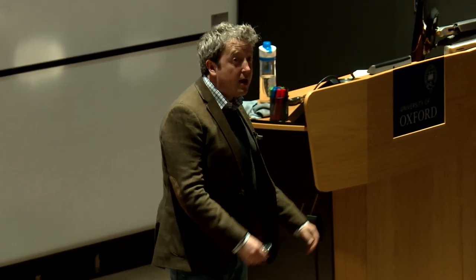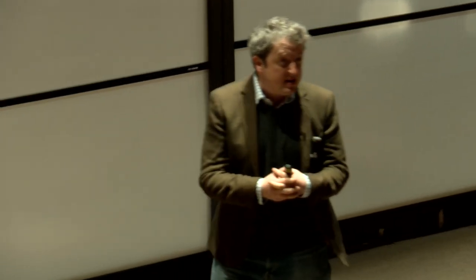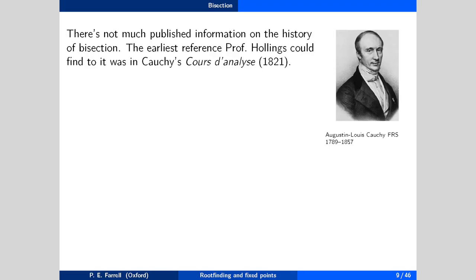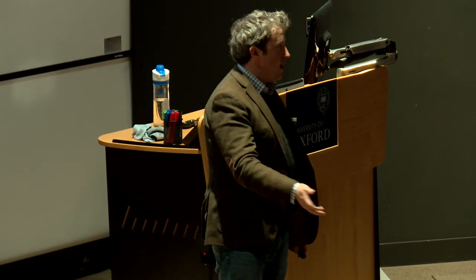I spent a few hours trying to find the history of bisection, and the first reference a mathematical historian here in the department, Christopher Hollings, could find was in Cauchy's famous textbook of analysis, his Cours d'Analyse, published in 1821. So think: this idea is so simple that you could have explained it to a Babylonian mathematician. If you ever get sent back in time and want to be the court mathematician to the Babylonian emperor rather than a farming serf, bisection is your meal ticket — you'll discover it two millennia before Cauchy and become rich and famous.